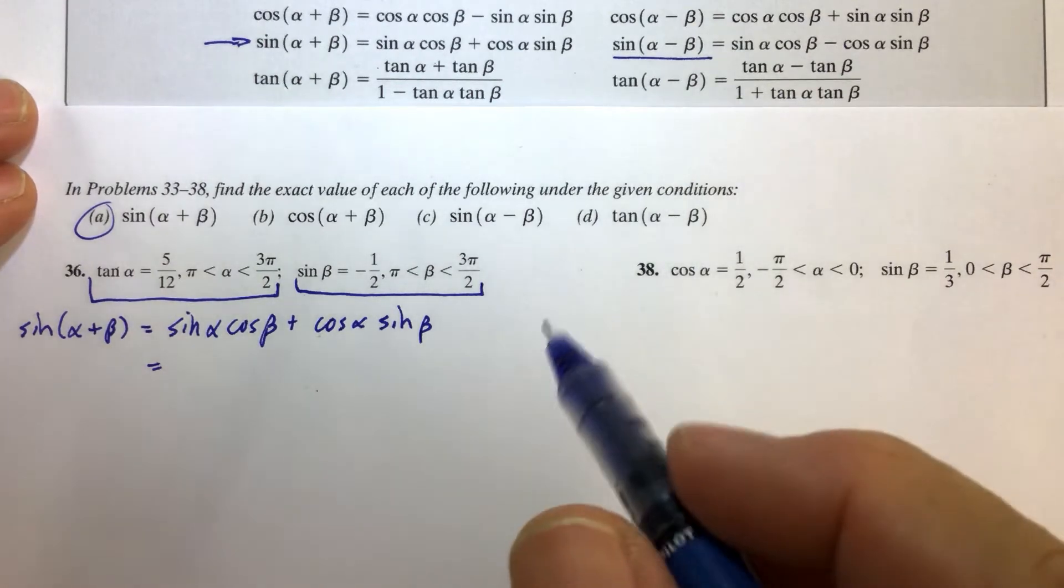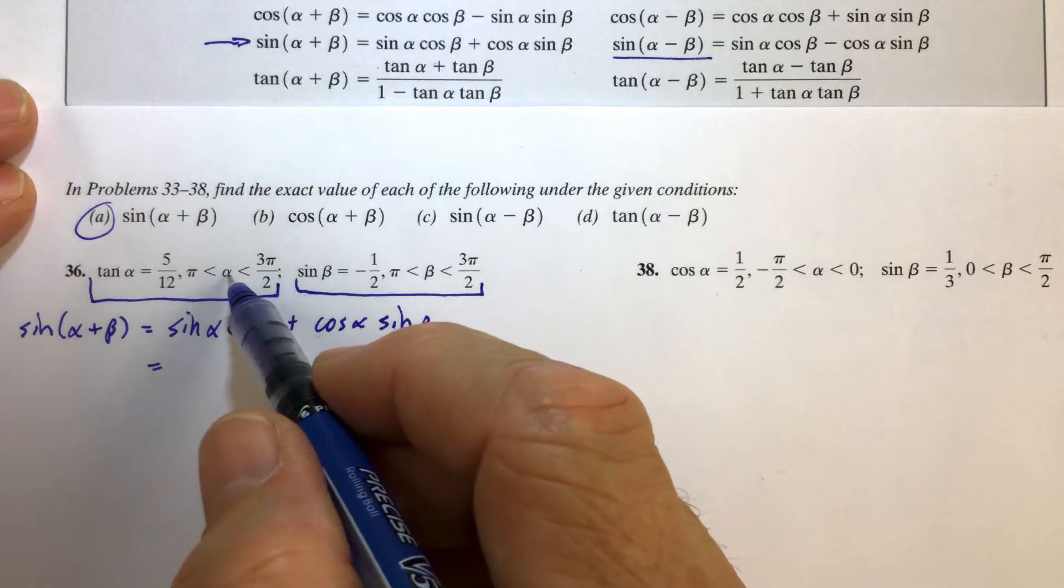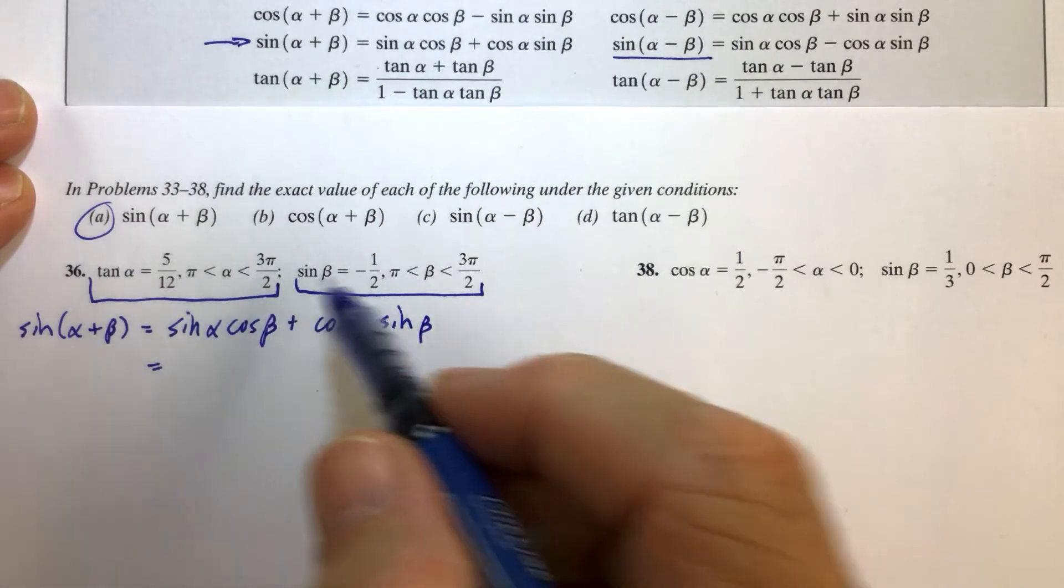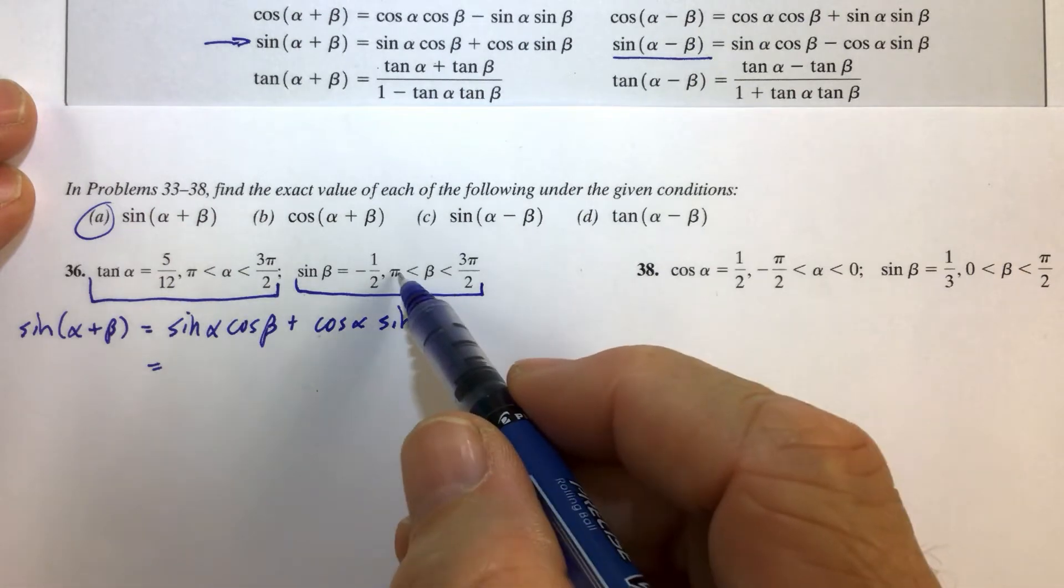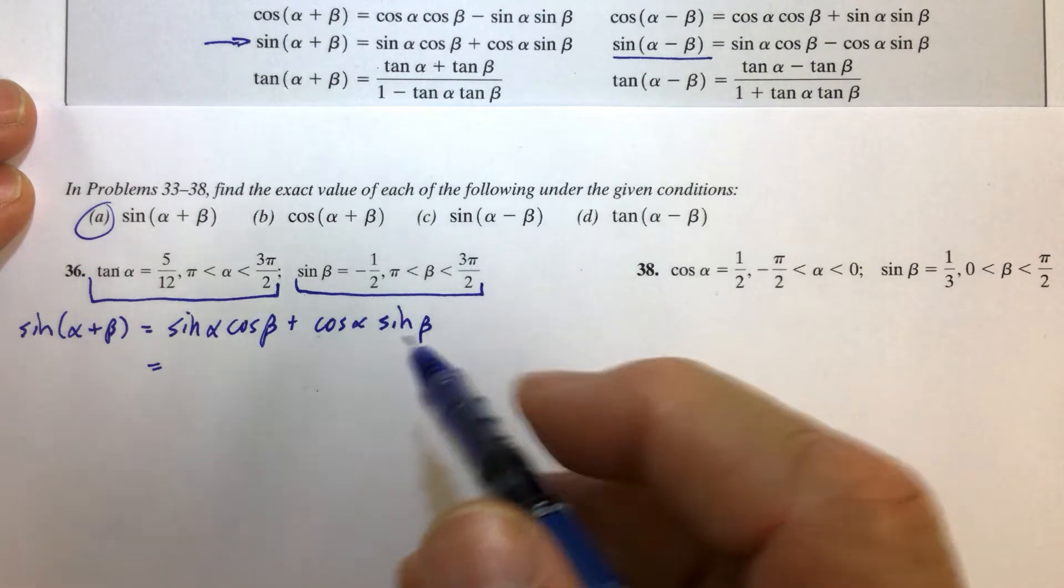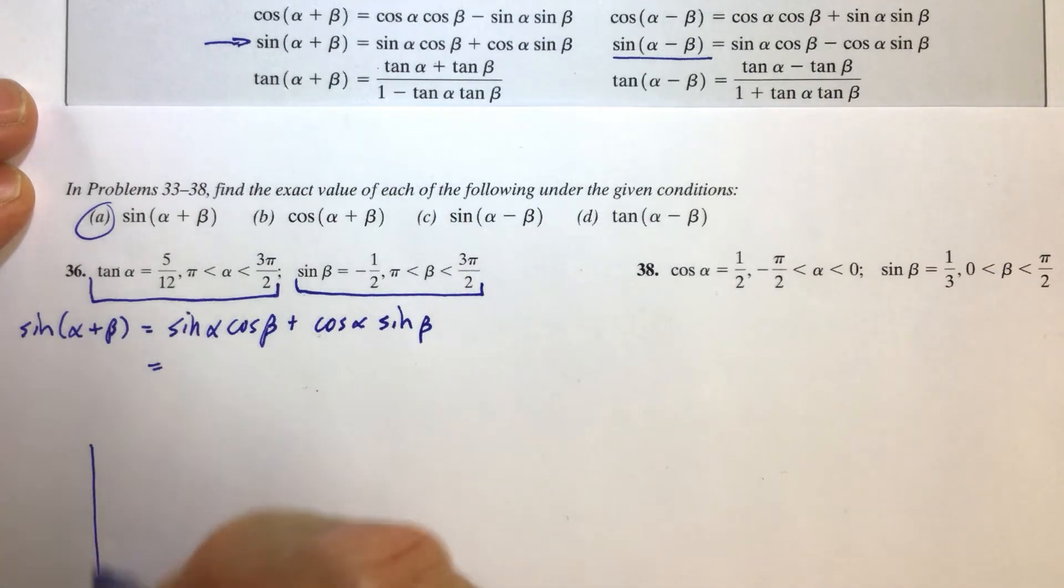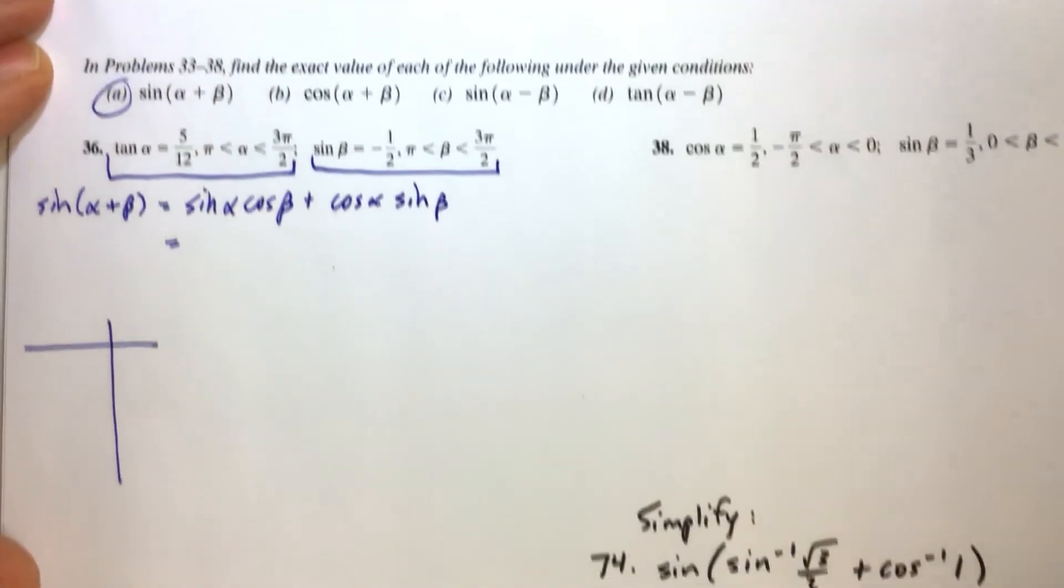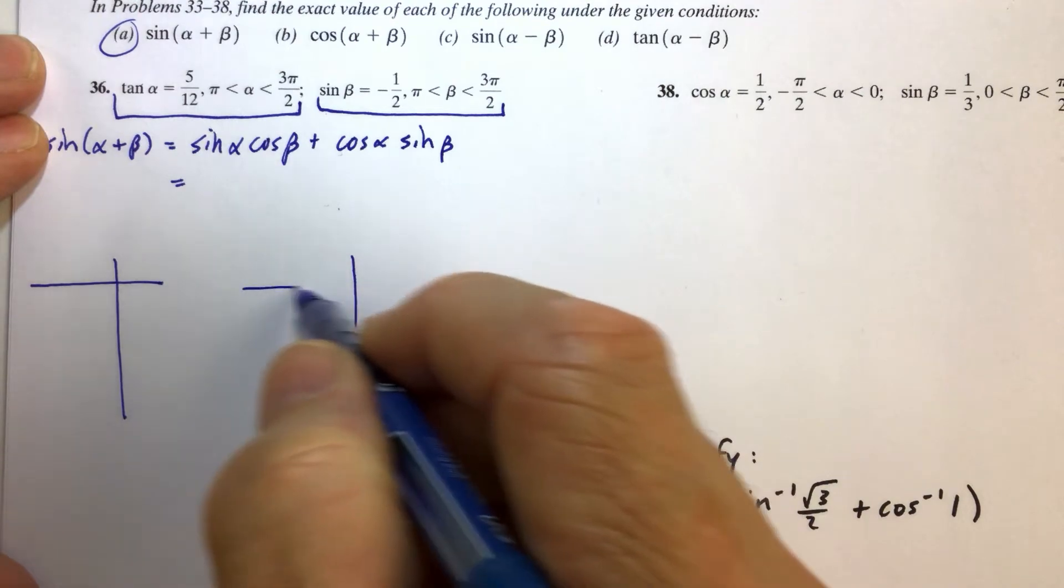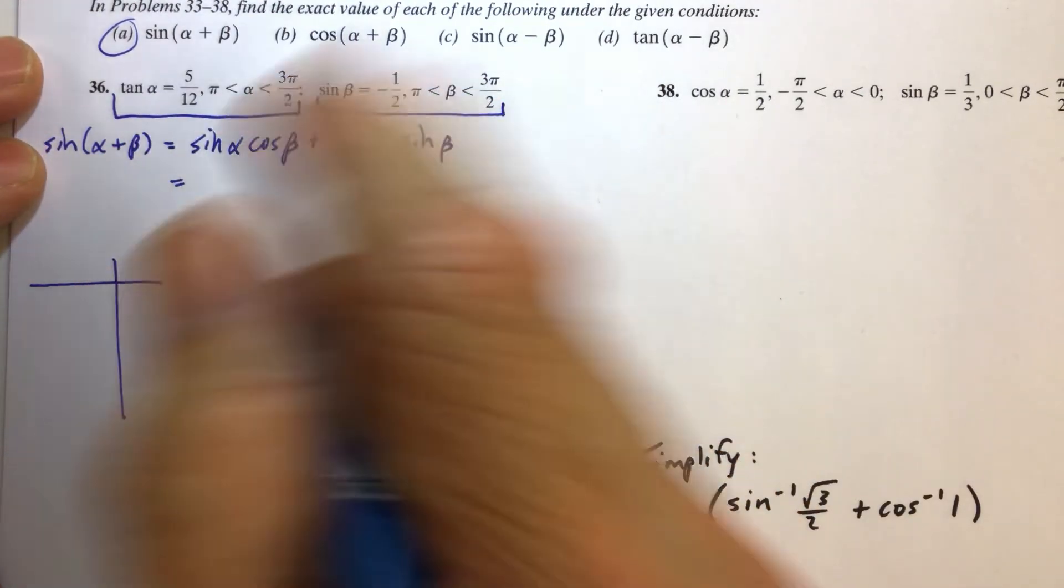Well, over here, where should we draw these triangles? Notice that alpha is in the third quadrant between pi and 3 pi over 2, and beta is also in the third quadrant between pi and 3 pi over 2. So we could draw just one scenario here in the third quadrant, but I don't want to do that. I want to draw them both separately so we can see them separately.